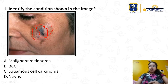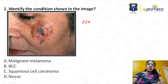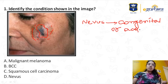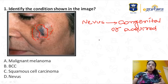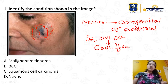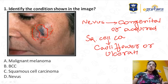Let us rule out the options one by one. Nevus can be congenital or acquired, but surrounding hyperpigmentation may not be a feature of nevus. Squamous cell carcinoma is characterized by cauliflower or ulcerative growth, which is not seen in this picture.